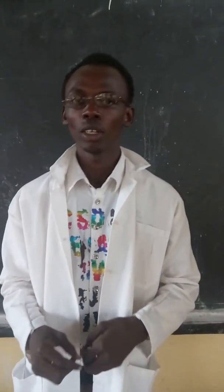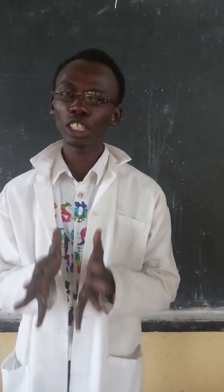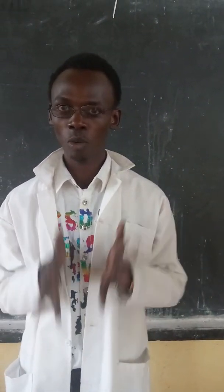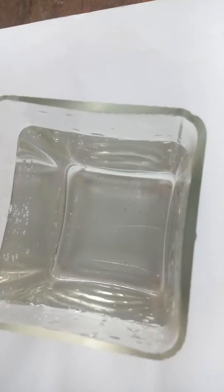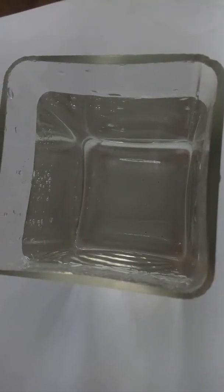Dear students, we're going to discuss about the first topic of form 4, which is waves. Let's see the definition of waves. A wave is a progressive disturbance propagated from a point in a medium or space without the movement of the points themselves. Waves transfer energy from one point to another. Examples include water waves, sound waves, and light waves.